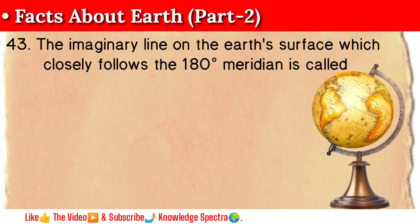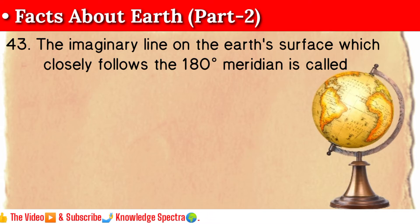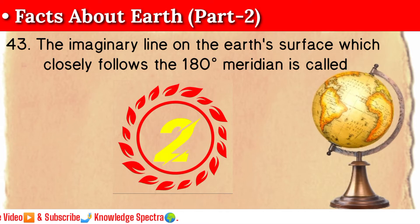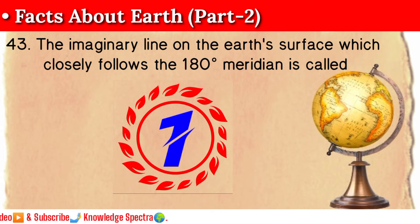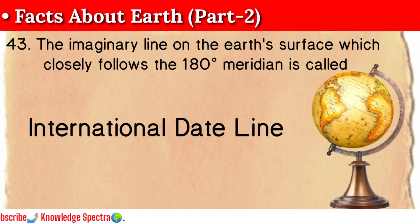Question 43: The imaginary line on the Earth's surface which closely follows the 180 degrees meridian is called the International Date Line.